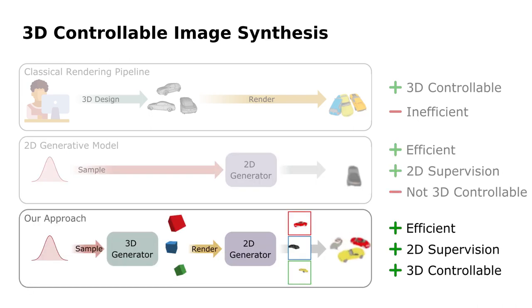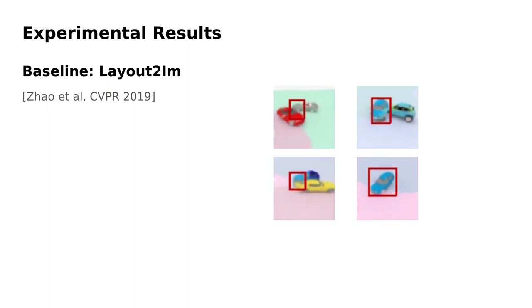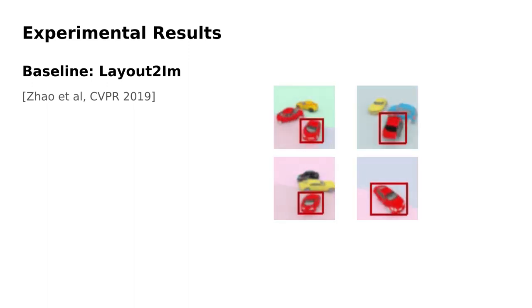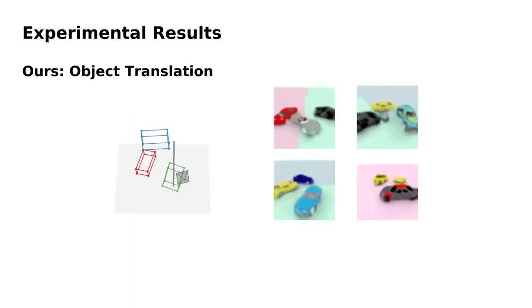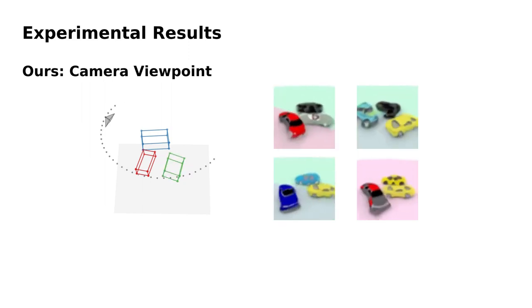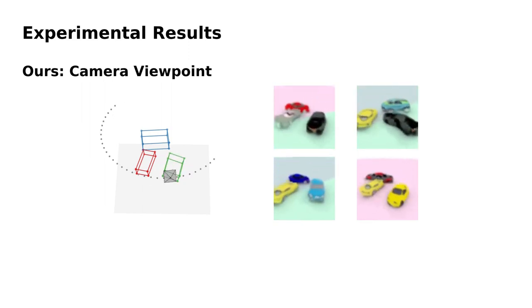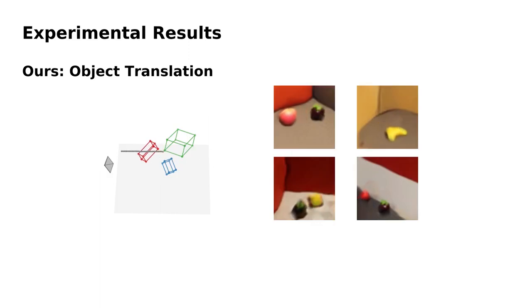In this work, we aim for combining the advantages of these two pipelines. Our key idea is to model the image generation process jointly in 3D and 2D space, which enables 3D controllability given only 2D supervision. While the 2D controllable baseline method fails to disentangle the object pose and identity, our method is fully 3D controllable in terms of 3D object translation, 3D object rotation, and camera viewpoint on both synthetic and real-world datasets.